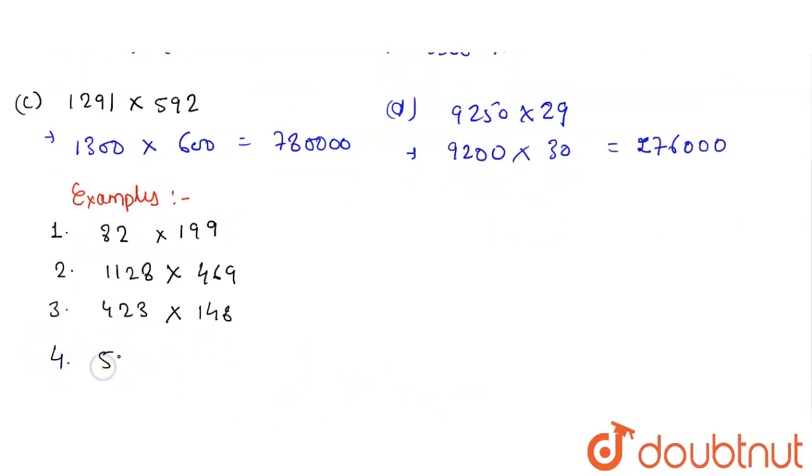Now let's also solve these examples. 82 is approximately 200, and 199 is 200, so its value would be 20,000. In the second example, 1128 is approximately equal to 1100, and 469 is approximately equal to 500. Multiplying these gives 550,000. Excuse me, I think there is something wrong with multiplication.